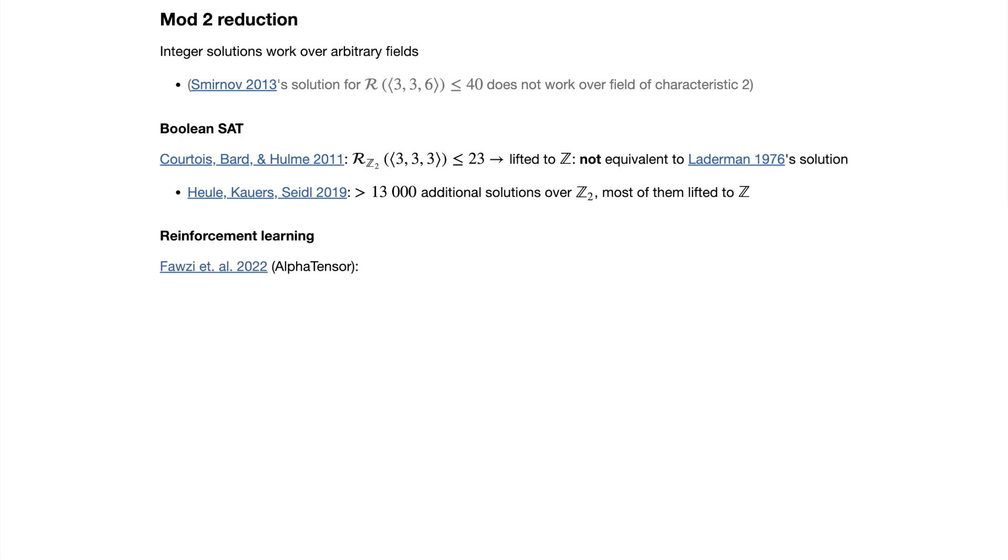DeepMind's AlphaTensor used reinforcement learning and found a rank 47 decomposition of 4×4×4, which is better than using a two-layer Strassen. Interestingly, this rank 47 solution cannot be extended to the integers.